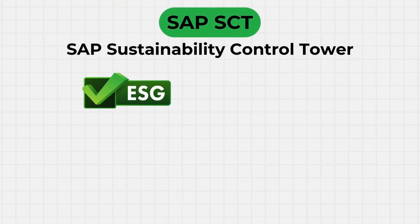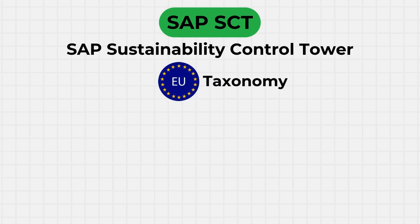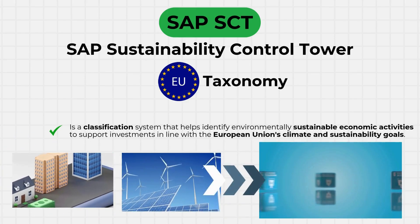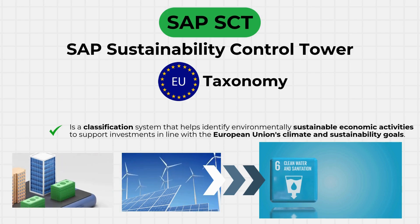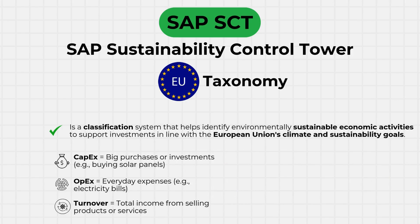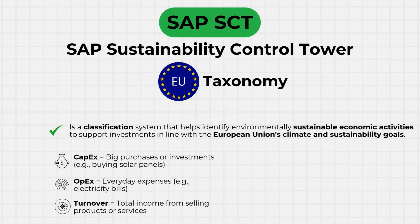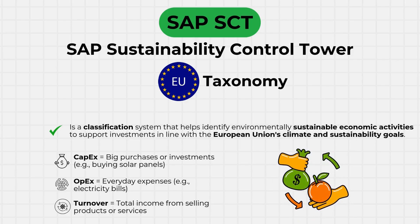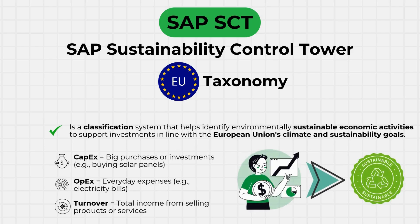SAP Sustainability Control Tower can also depict EU taxonomy regulations, created by the European Union to help businesses and investors identify which activities are environmentally sustainable. It focuses on aligning investments with climate and sustainability goals. Activities can be found in capital expenditure — such as buying solar panels — operational expenditure, like paying electricity bills, and turnover, which is the total income generated from selling products or services, measuring how much of a business's activities relate to sustainable practices.